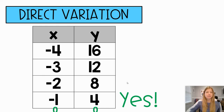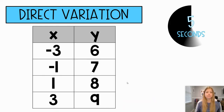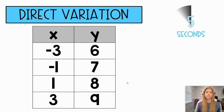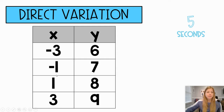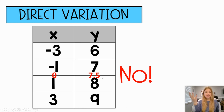Use that same idea for this next one. For this one, zero-zero would actually be within these values here. Zero on my x would fall here, but I would definitely not be matching up with zero — I'd be going in between seven and eight, which is 7.5. Definitely not the origin, so the answer is no.